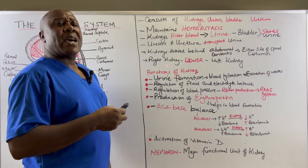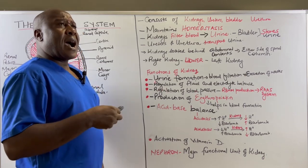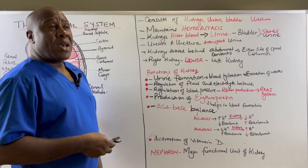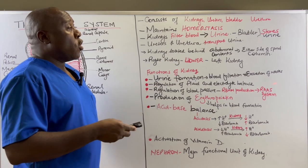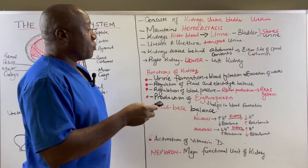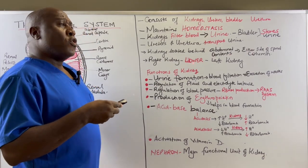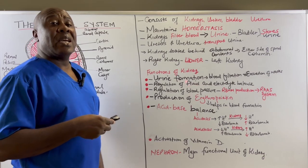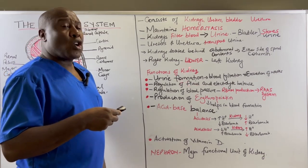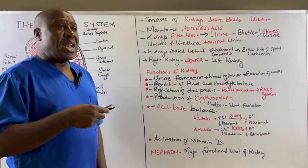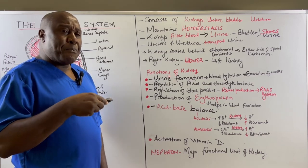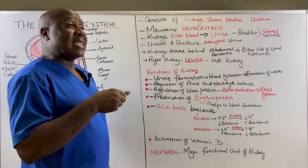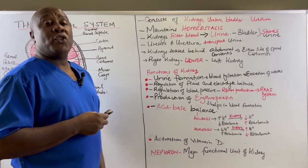There are two kidneys — the left kidney and the right kidney. These kidneys are located behind the abdominal contents, on either side of the spinal column. The right kidney is located slightly lower than the left kidney. This is because of the position of the liver — the liver lies above the right kidney and tends to move that right kidney to a level slightly lower when compared to the left kidney.